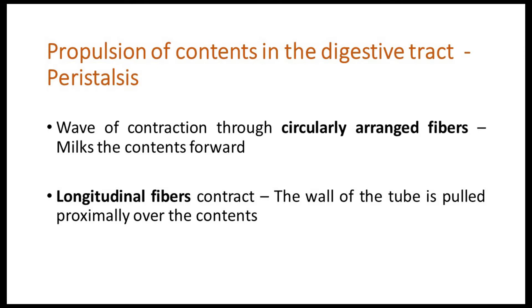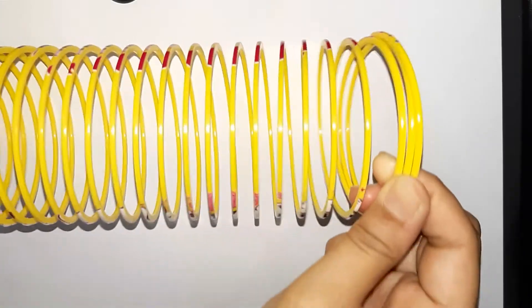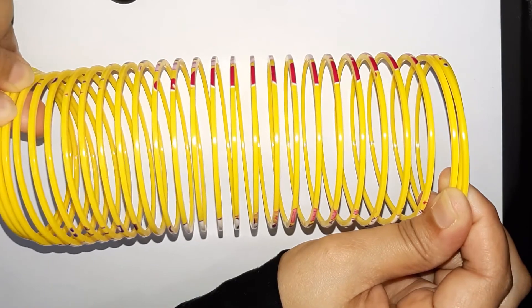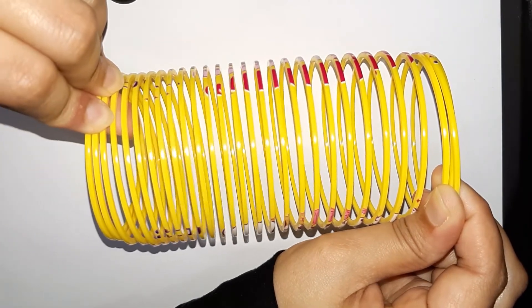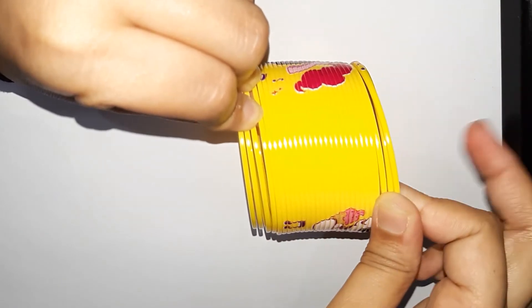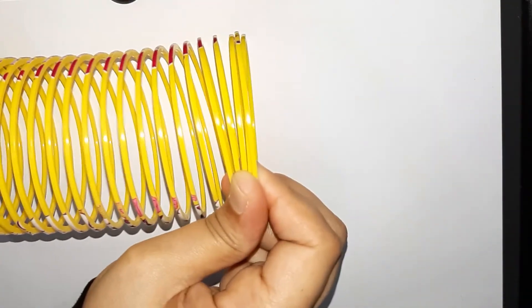So when the circularly arranged fibers contract, assuming these are the circularly arranged fibers, as a wave of contraction passes through them it pushes the contents of the lumen forward like this.